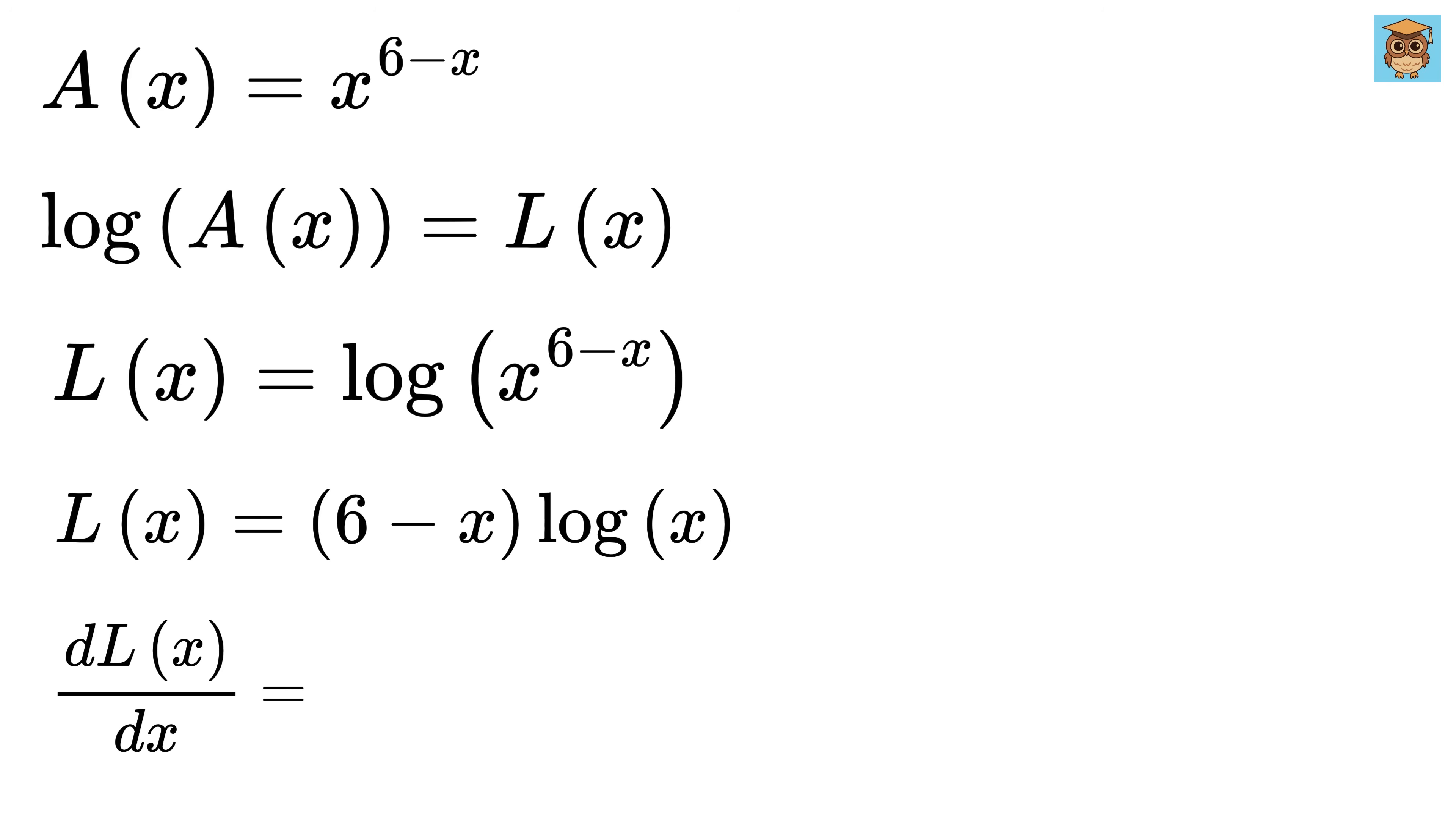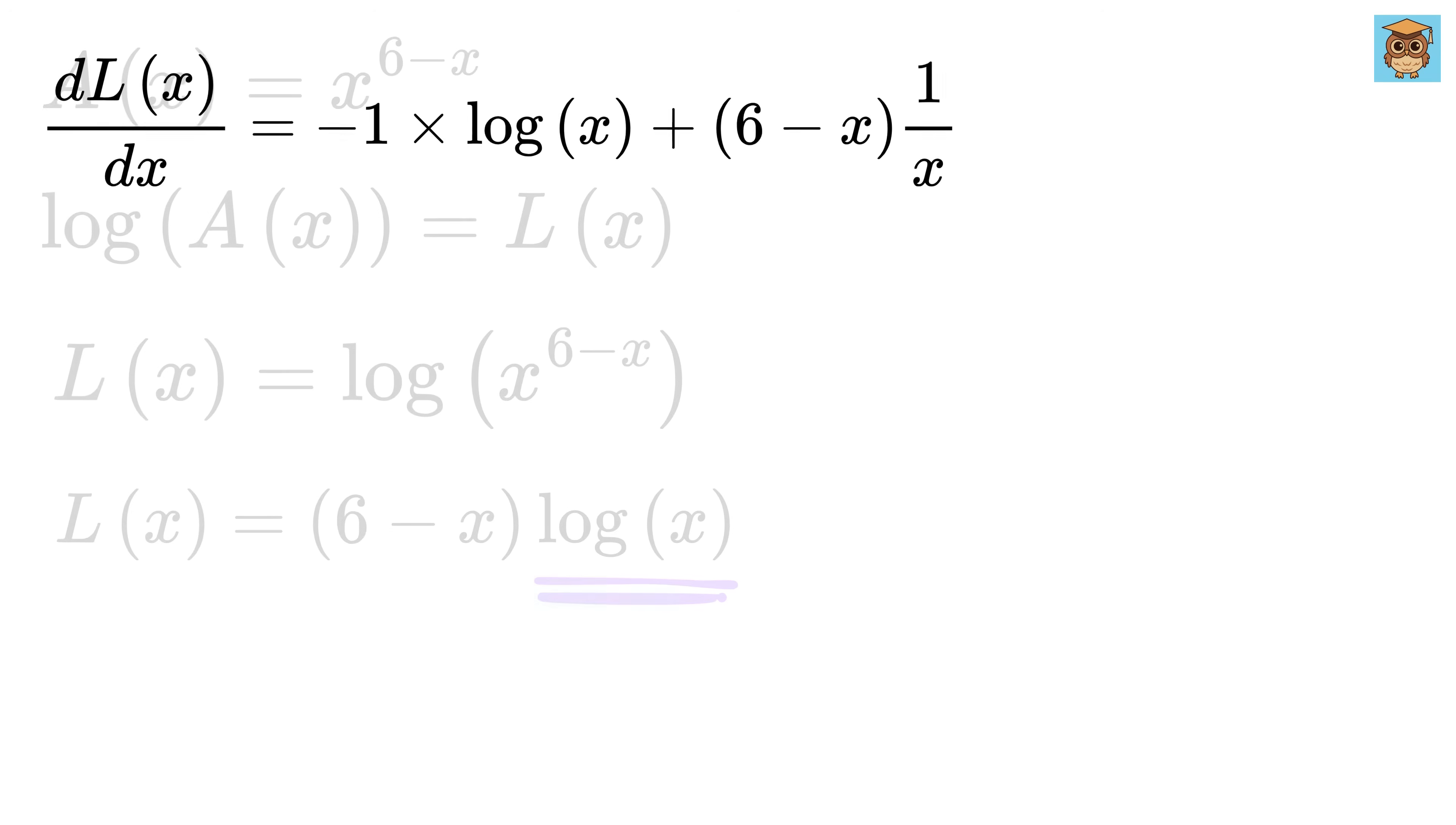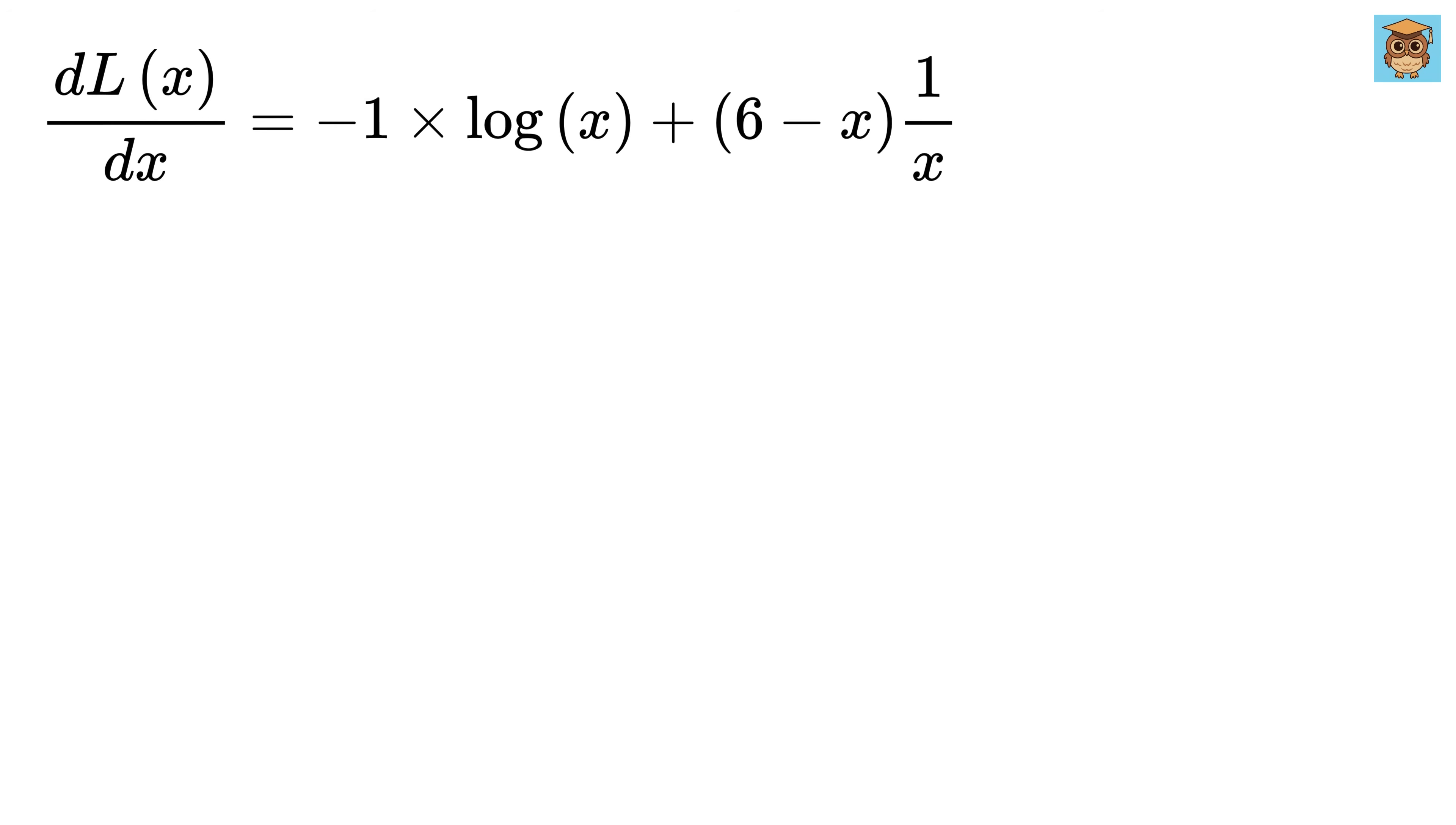Now we differentiate l with respect to x. Using the product rule, we get derivative of 6 minus x, which is minus 1 times log of x, plus 6 minus x times derivative of log of x, which is 1 by x. So the derivative becomes minus log of x plus 6 minus x, divided by x.